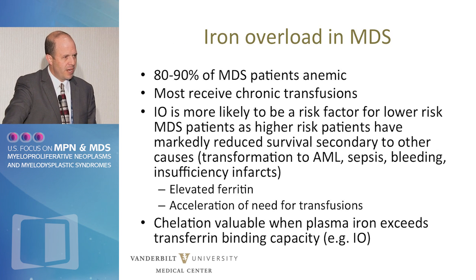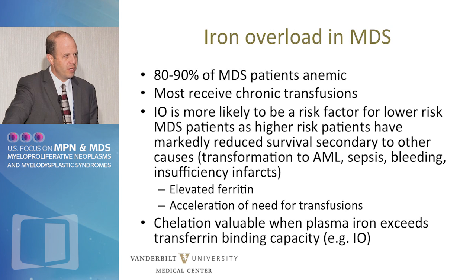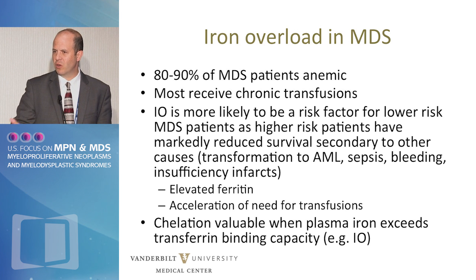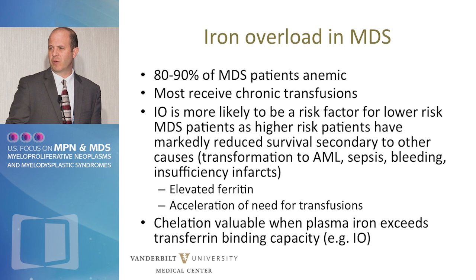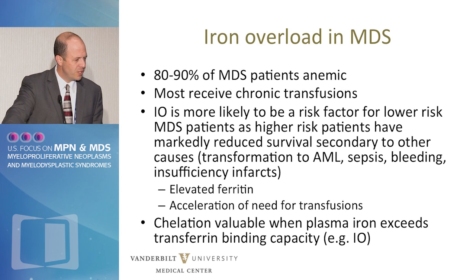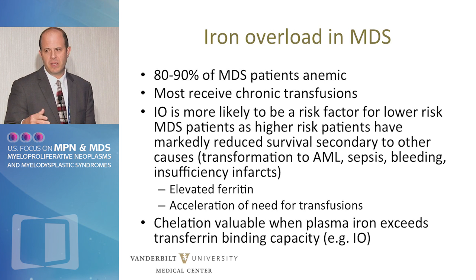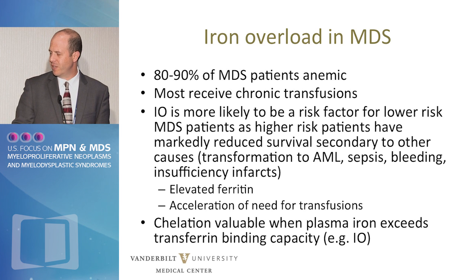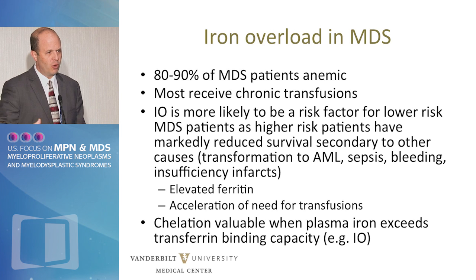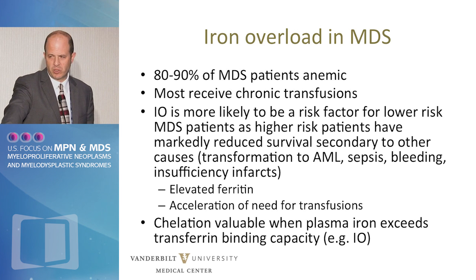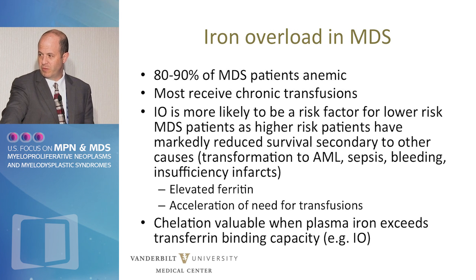In MDS, about 90% of patients are anemic at some point in their disease course, and most receive chronic transfusions. Iron overload is historically thought to be more associated with lower-risk MDS because those patients are around longer to receive more transfusions. With new therapies, higher-risk patients are living longer, so this is not always the case. We also know that the frequency and volume of transfusions in a short period of time is more damaging — 20 transfusions over 20 weeks is probably a greater risk factor than 40 transfusions over 50 to 60 weeks.